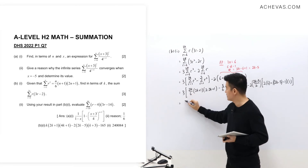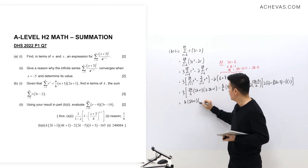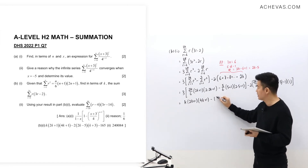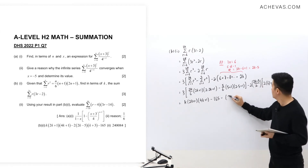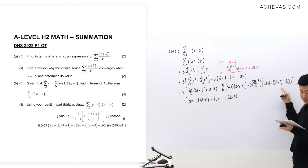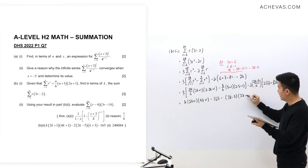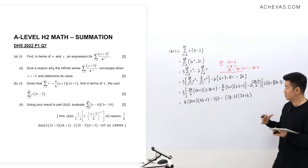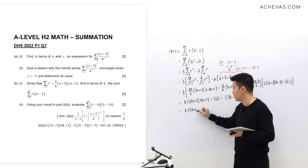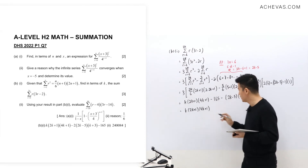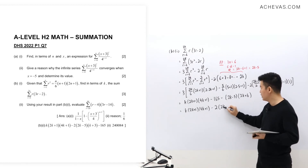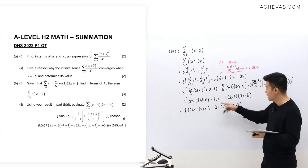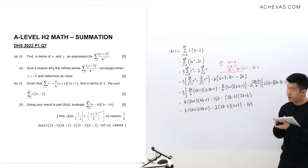Simplifying: 6 divides into 2k to give k, so the r² contribution is k(2k+1)(4k+1). Subtracting 165, then subtracting 2 times the AP sum: the 2 and 2 cancel, leaving (2k-5)(2k+6). Factorizing out 2 gives 2(2k-5)(k+3). So the full expression simplifies to k(2k+1)(4k+1) - 165 - 2(2k-5)(k+3).